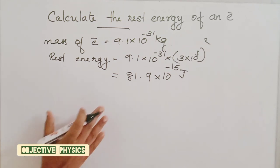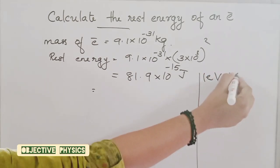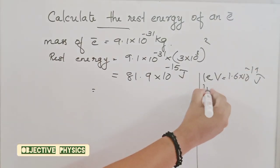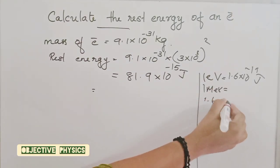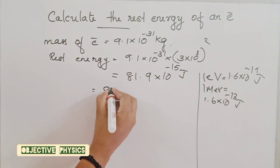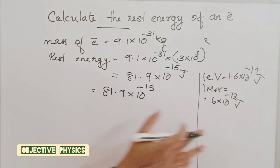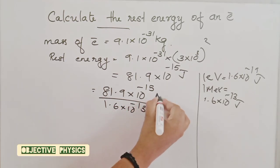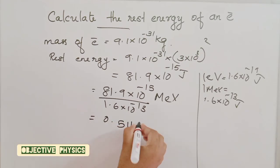1 electron volt is equal to 1.6 × 10⁻¹⁹ joule. 1 mega electron volt is equal to 1.6 × 10⁻¹³ joule. Converting 81.9 × 10⁻¹⁴ into mega electron volts by dividing by 1.6 × 10⁻¹³ MeV, that is 0.511 MeV.